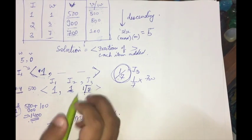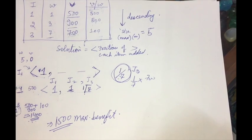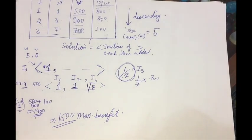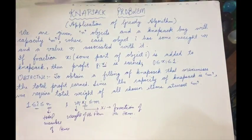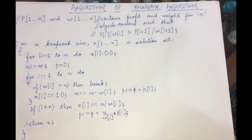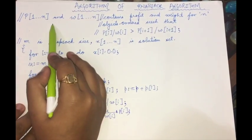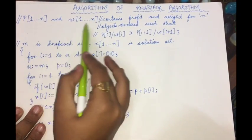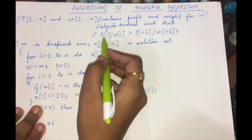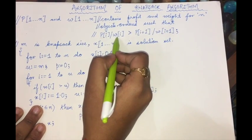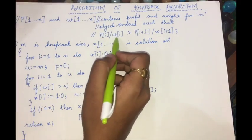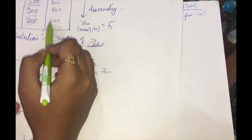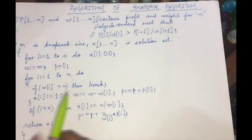I hope the example is clear. Now let's discuss the formal algorithm for the knapsack problem. Here p is the profit and w is the weight — the value and weight of each item for n items. The condition is that v/w of item i must be greater than v/w of item i+1, meaning items are arranged in descending order of value-to-weight ratio — that is the first requirement.